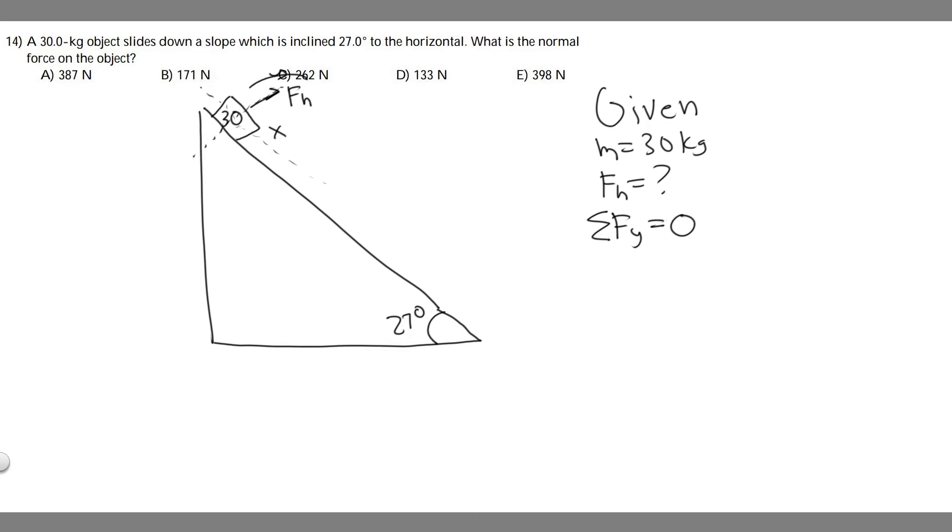We're gonna treat a force going upwards as positive and a force going this way as negative. Just imagine like it's a normal y-axis, this is positive, this is negative. So we know we have F sub n going in the positive direction.